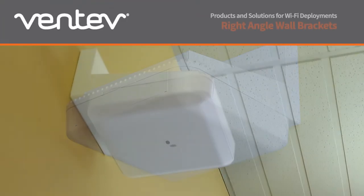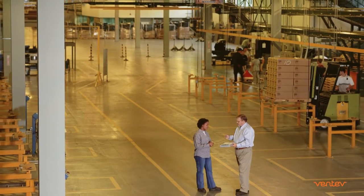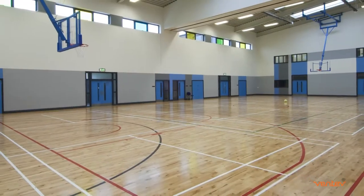Ventev's right angle wall brackets position access points horizontally to enable optimal Wi-Fi coverage at the ideal height to reach users in high ceiling environments.